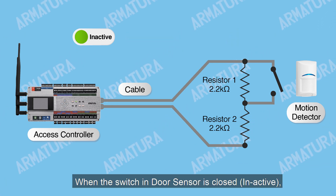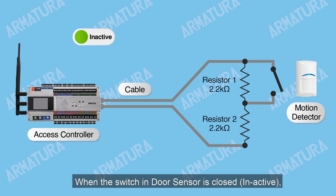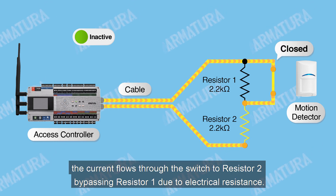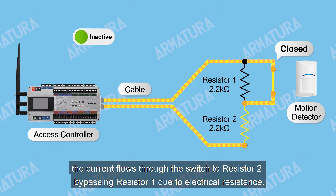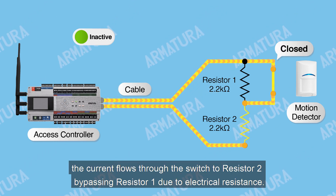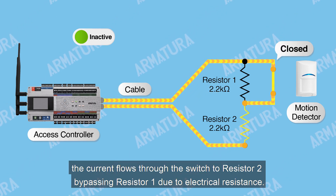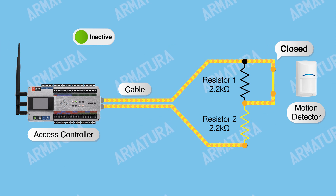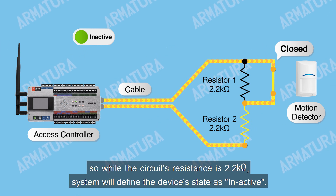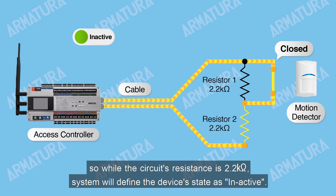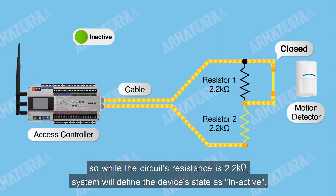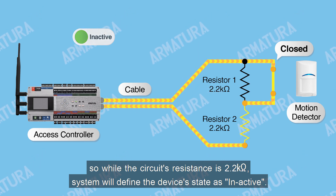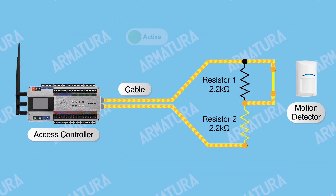When the switch in the door sensor is closed, the current flows through the switch to resistor 2, bypassing resistor 1 due to electrical resistance. So while the circuit's resistance is 2.2 kOhms, the system will define the device's state as inactive.